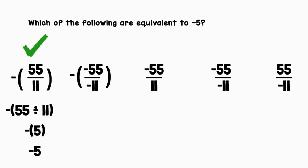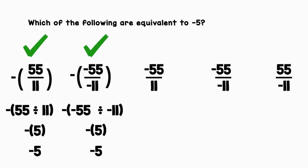Now we've got one that looks a little more complex. We can rewrite it as negative (negative 55 divided by negative 11). Inside the parentheses, negative 55 divided by negative 11 gives us positive 5. We bring down the negative sign outside the parentheses, which equals negative 5. We can give this a check.